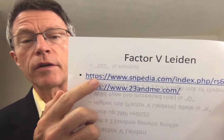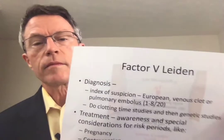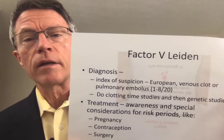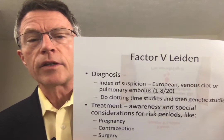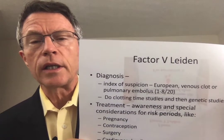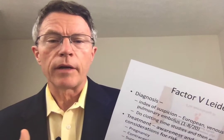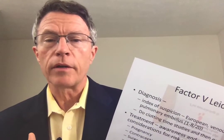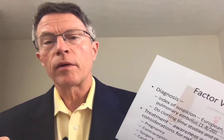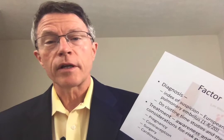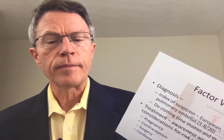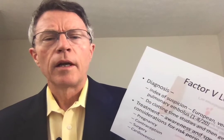This is a great do-it-yourself Factor V Leiden test. Now, what if you haven't seen the video on Factor V Leiden or don't remember it? Factor V Leiden is an increase in clotting — it's the most common genetic increase in clotting seen in Europeans. Caucasians in the U.S. and North America have about a 1 in 20 probability of having Factor V Leiden. The 'Leiden,' by the way, comes from the town where it was first discovered — Leiden in Europe, I believe in the Netherlands.